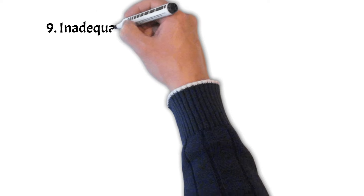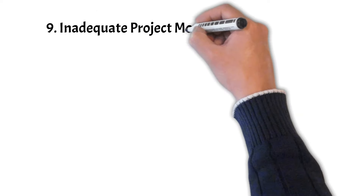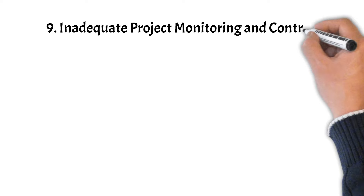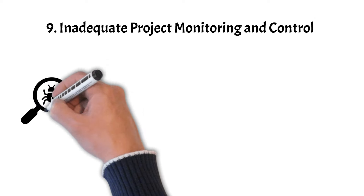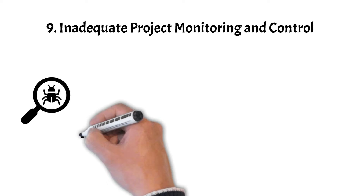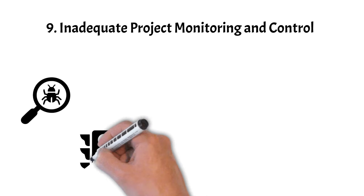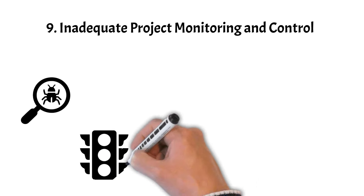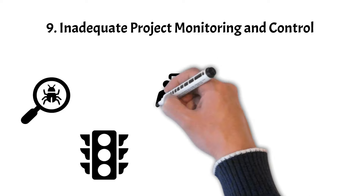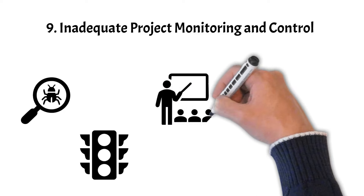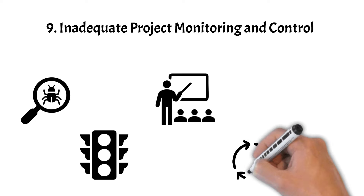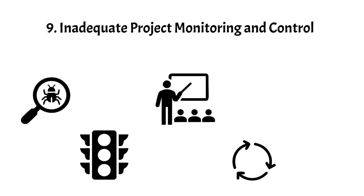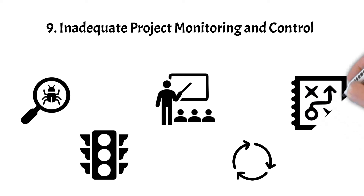Pitfall 9: Inadequate project monitoring and control. Failing to regularly track project progress and make necessary adjustments can lead to missed deadlines, cost overruns, and project failure. Effective project monitoring involves regular status updates, progress reports, and tracking key performance indicators. By keeping a close eye on project metrics, project managers can identify potential issues early on and take corrective actions to keep the project on track.